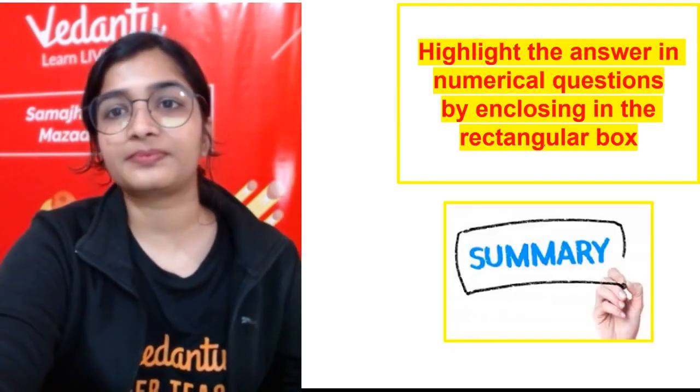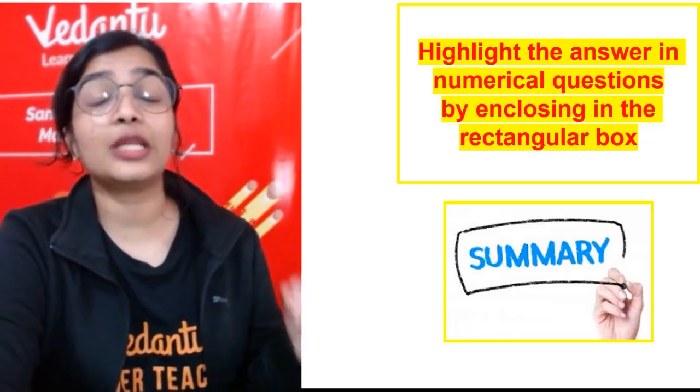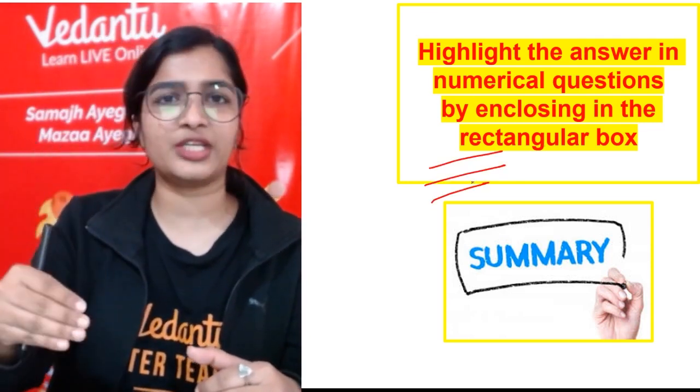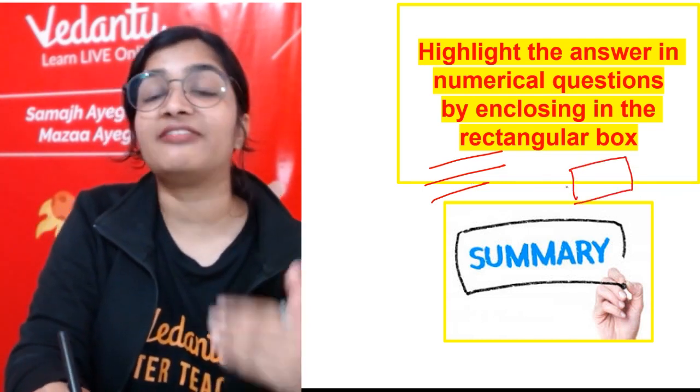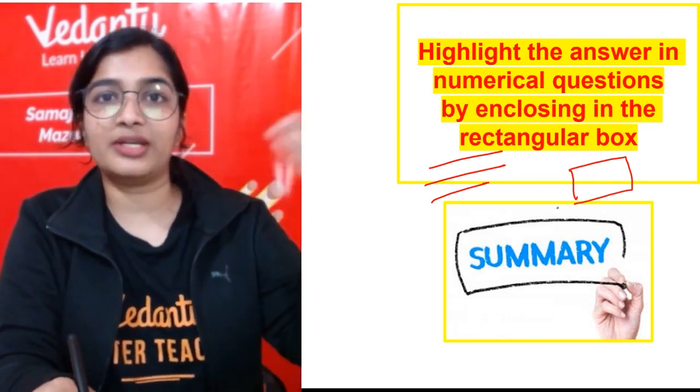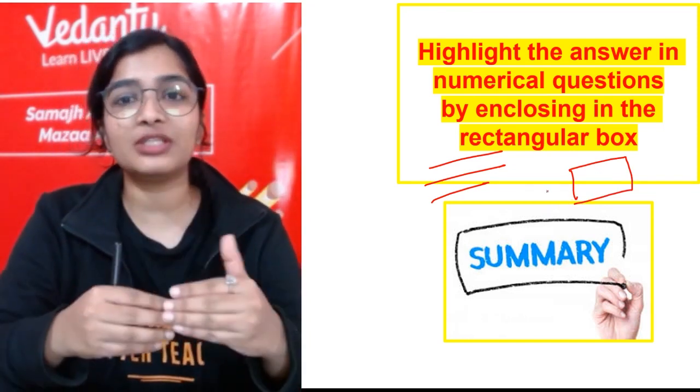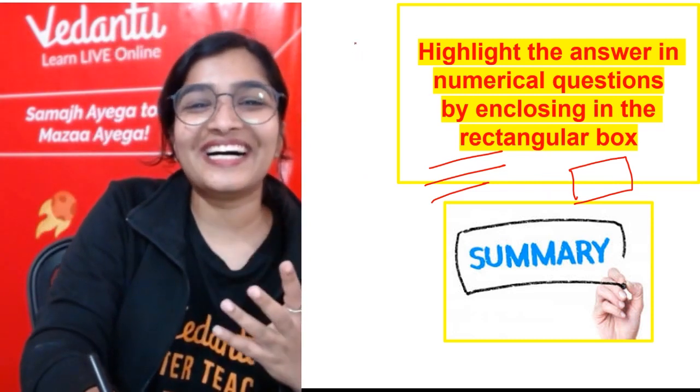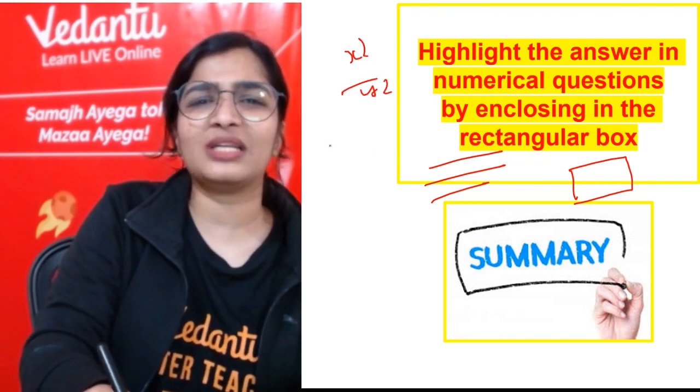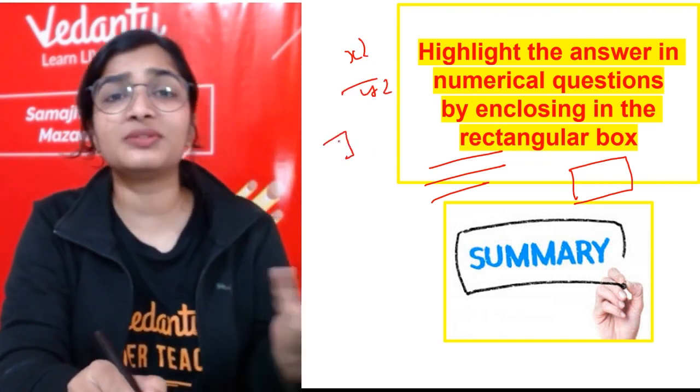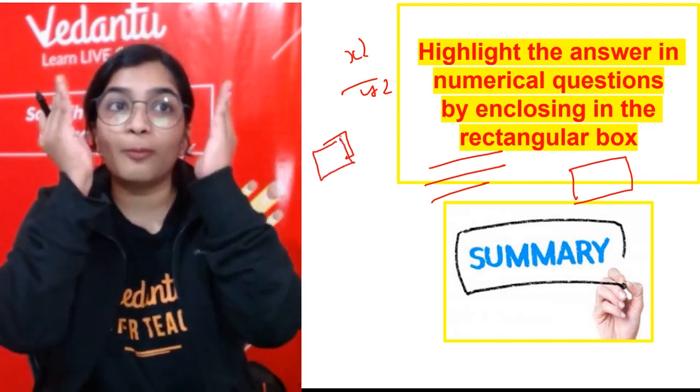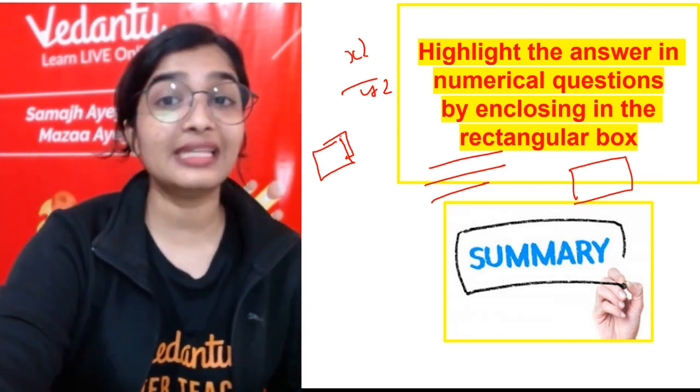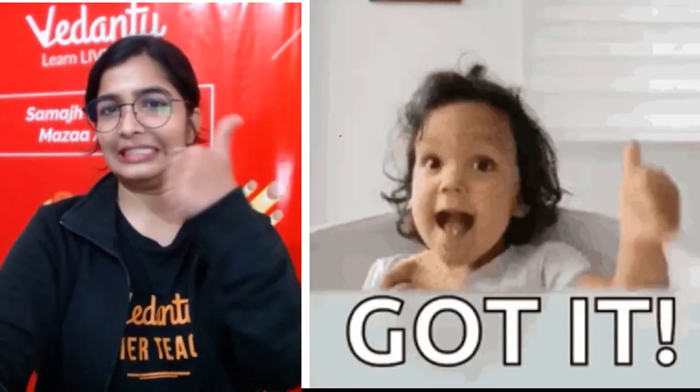Highlight the answer in the numerical questions by enclosing it in the rectangular box. Of course, you will do it in the step-wise manner, first writing the formula, substituting and all that, but always make sure to highlight the final answer. The points, the marks will be awarded step-wise, but still if you highlight the final answer it will be easy for them to look for that final answer. Because sometimes I have seen the math paper also, you know, like some x square, y, y, y, and there will be in one corner they have mentioned the answer. How will I know which one is the answer? But if you highlight it, so only by at first glance I'll know, this guy has found out the right answer or not. So always highlight the answer, especially in numerical questions. Got it?